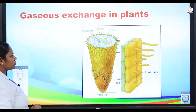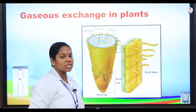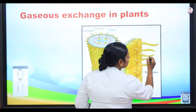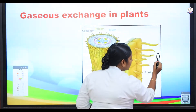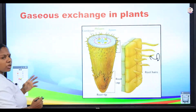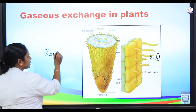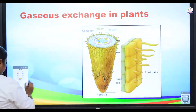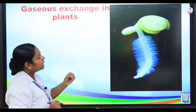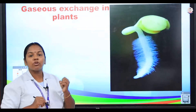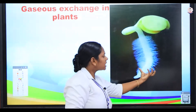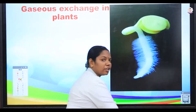Now we are going to see how the gaseous exchange takes place in plants. You know, children, mostly many of the plants possess root hairs. The root hairs penetrate in between the soil and with the help of their cells, the oxygen from the soil diffuses into the root hairs and is directly transported to the plants. In majority of plants, the exchange of gases takes place through the roots. But only the young roots can take part in respiration because only the young roots possess root hairs; in older roots, root hairs are absent.